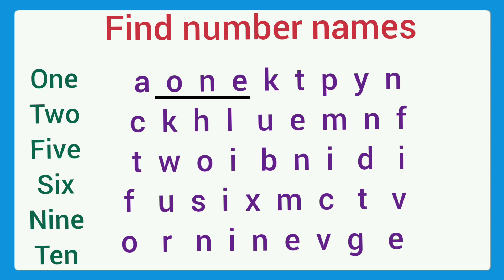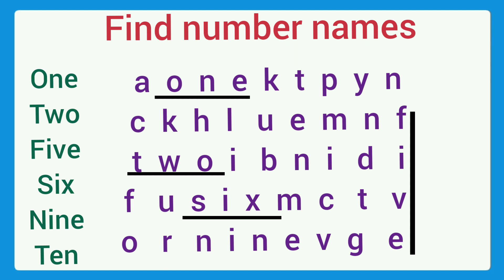Next: find number names. First one — O-N-E, one — where is one? Here. Next: T-W-O, two — where is number two? It's here. Next: five — F-I-V-E — where is that word? It's here. Next: six — S-I-X — it is here. Next: nine — N-I-N-E — it is here. And ten — where is ten? It's here.